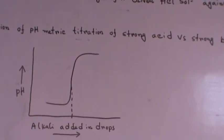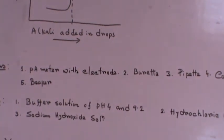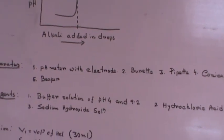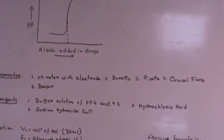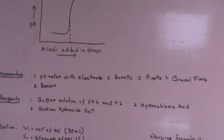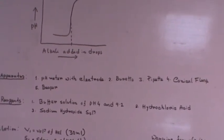So for this one, you can see over here these are the necessary apparatus and the reagents. In apparatus, as the experiment is pH metric titration, we need pH meter with electrode, burette, pipette, conical flask and beaker.